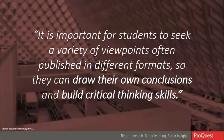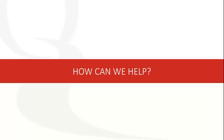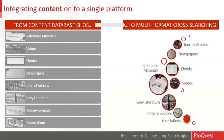This is where ProQuest steps in to figure out how we can help make this transition easier. If academic research is changing and students and faculty are relying on an increasing variety of content types, what can we do to make that more seamless? One of the first things we did was attempt to integrate all the content onto a single platform, moving away from content database silos that were all on different websites requiring different credentials — where users could only look at newspaper articles or only journal articles.